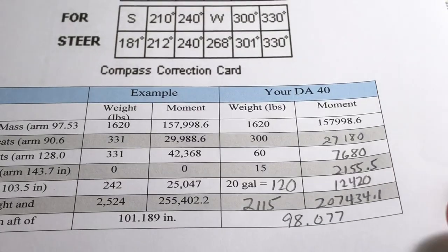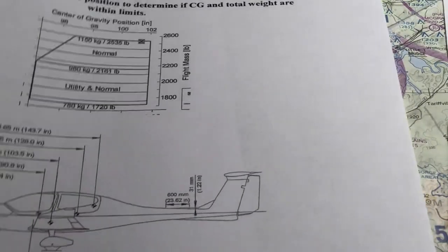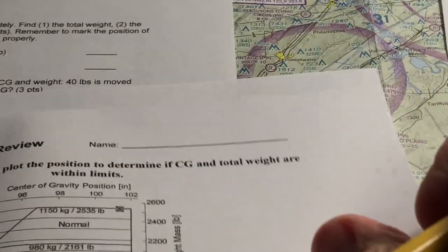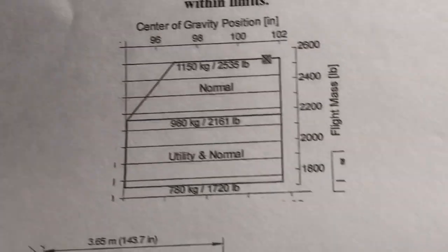Now we just have to see if that falls within the weight and balance limitations of the airplane. So we'll take a look at the weight and balance envelope. You can find this weight and balance envelope in the pilot's operating handbook. So here's the envelope.